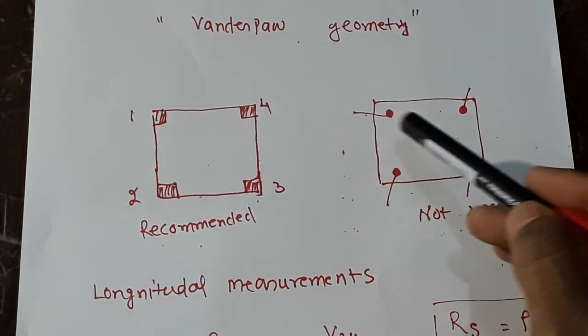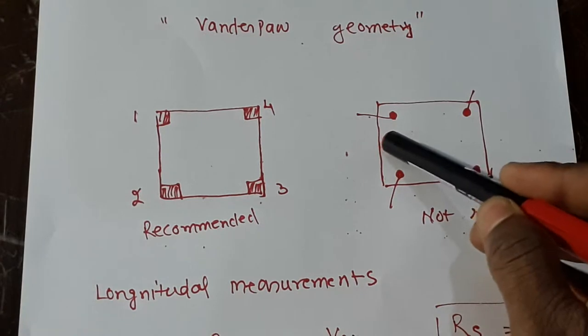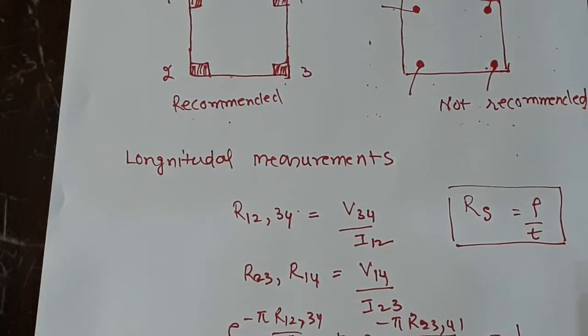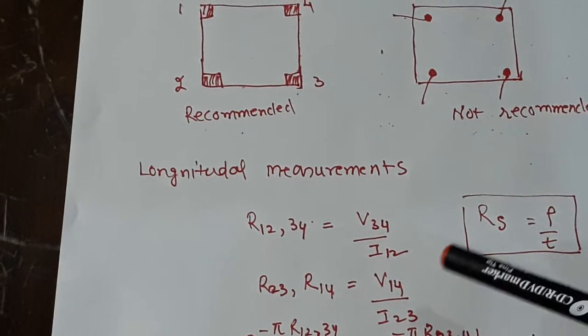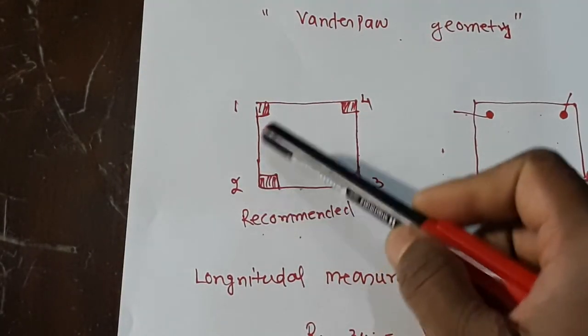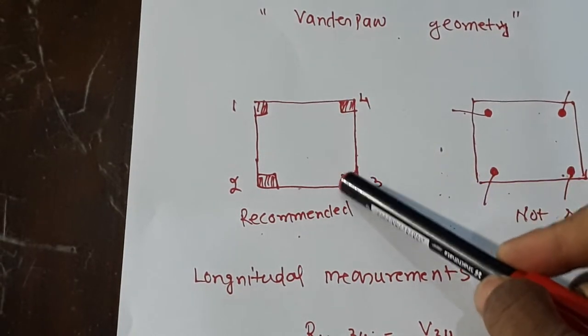You can also make contact here, which will not work, so it's not recommended. That's the drawback of the system. If you want to measure longitudinal resistance with this geometry, what you need to do is pass current through here and measure the voltage here.